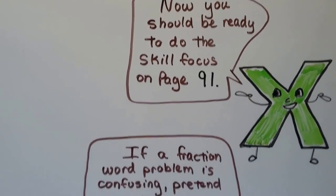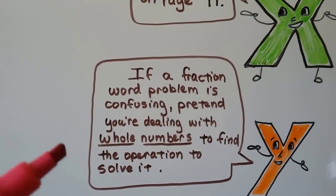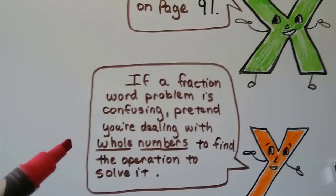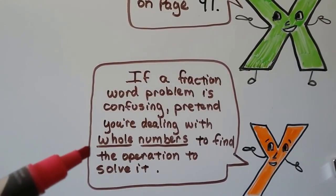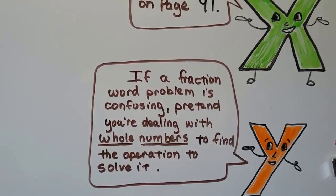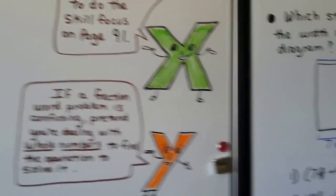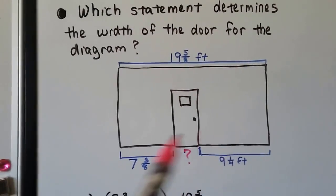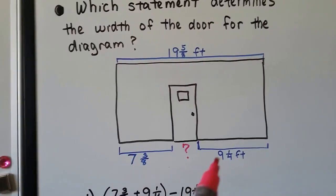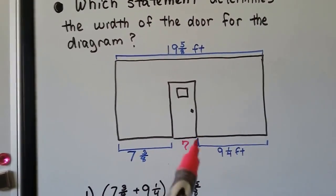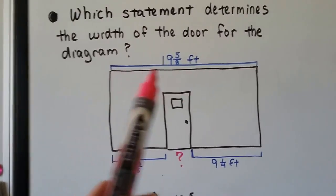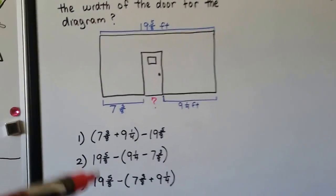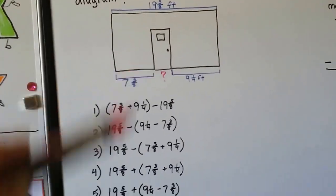If you do have problems, remember that if a fraction word problem is confusing, just pretend you're dealing with whole numbers to find the operation to solve it. Pretend the fractions are whole numbers and try to solve it that way — it might make it easier to see what operation (add, subtract, multiply, or divide) you need to do. For example: which statement determines the width of the door for the diagram? We have a wall where one side is 7 and 3 eighths, the other side is 9 and 1 fourth, and the whole wall is 19 and 5 eighths feet.